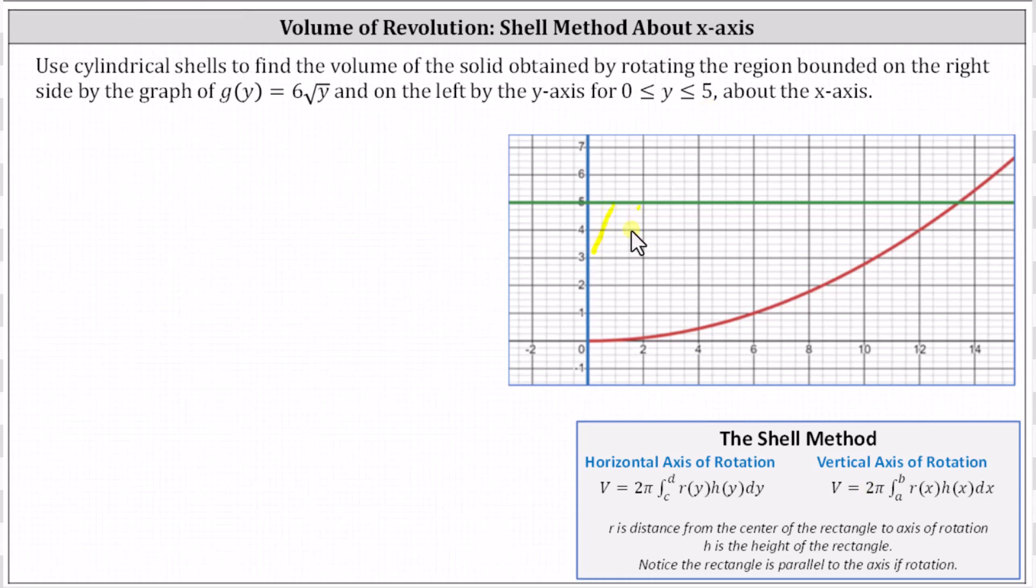So this is the bounded region R, and we're rotating this region about the x-axis, which would be here.